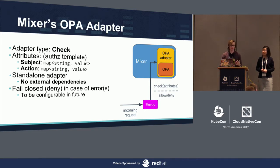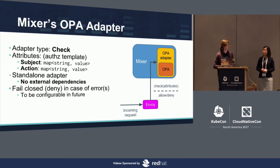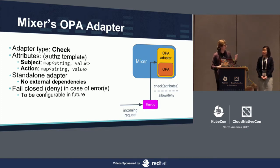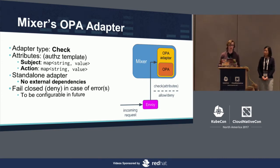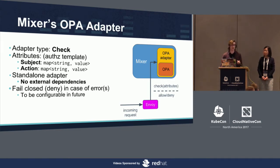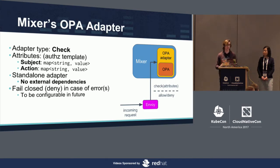When you configure OPA as an operator, you tell it what inputs to provide to the adapter. You can map any Istio attributes into subject and action collections — it's very flexible and you decide what data to pass to the policy engine. OPA itself is embedded into Mixer as a library, so it's totally standalone with no external dependencies, which makes it nice and easy to deploy.